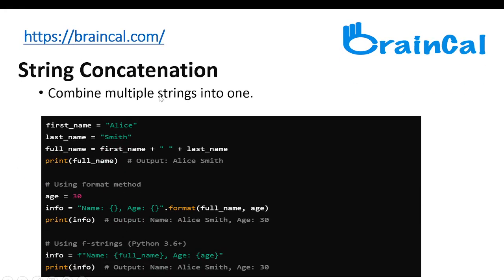String concatenation combines multiple strings into one. To concatenate two strings, you can use the plus operator. Here, first_name is a variable representing 'Alice' and last_name is 'Smith'. So full_name is first_name plus a space in quotation marks plus last_name. If we print full_name, the output will be 'Alice Smith' with the space. This can also be used for age, and also using F-strings.